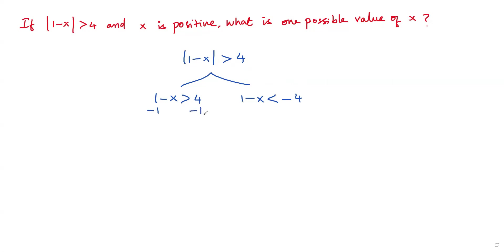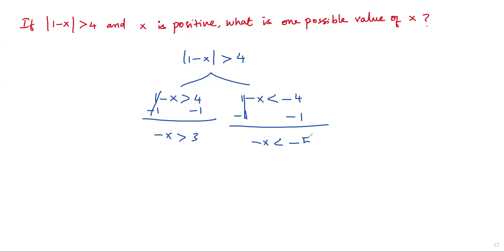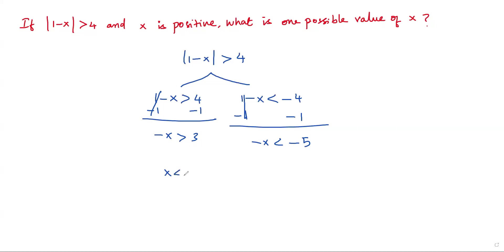To isolate x, I subtract one from both sides. One minus one cancels out, giving me negative x. So the first branch gives negative x greater than 3, which means negative x less than negative 5. To make negative x into positive x, I multiply both sides by negative one. In an inequality, when I multiply both sides by a negative sign, I have to flip the inequality sign. So negative x becomes positive x, and this negative 3 becomes negative 3.